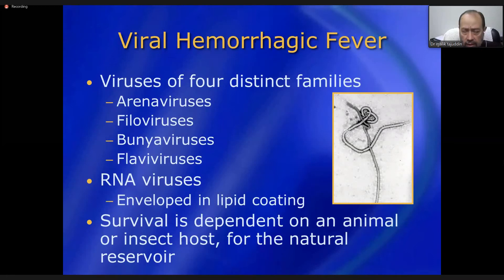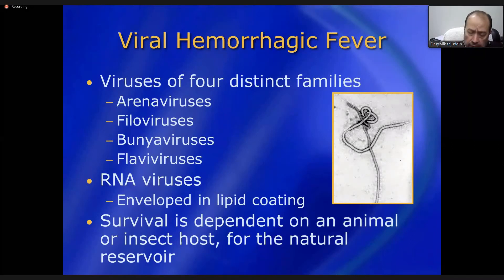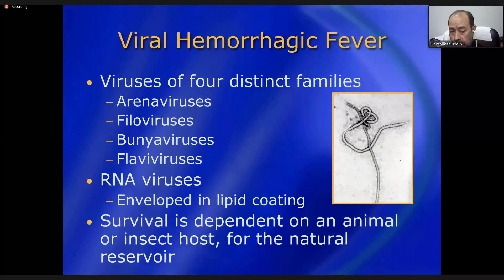Nearly all of these viruses are RNA viruses enveloped in a lipid coating. This lipid coating is also present on the virus causing COVID-19, and it is damaged by soap because soap reduces surface tension. This lipid coating is present on these hemorrhagic fever viruses as well, making them similarly susceptible to soap-based inactivation.